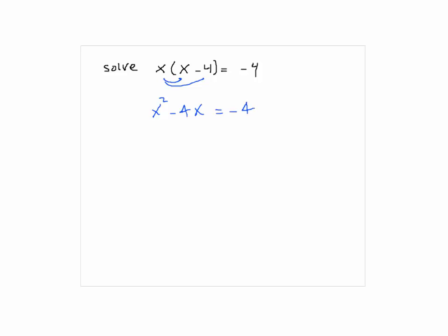Go on Shannon. What's the next step? Add 4 to both sides. Alright.